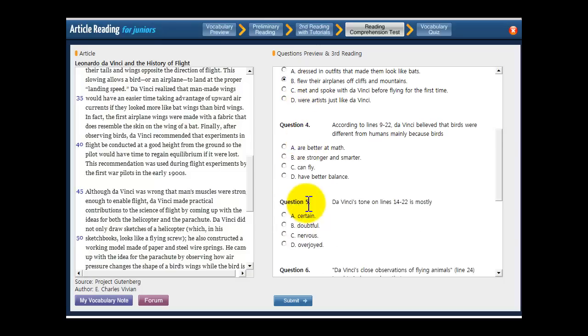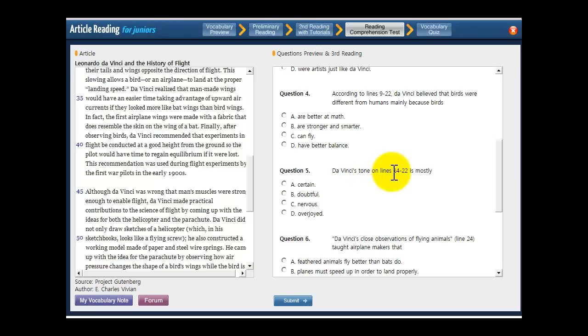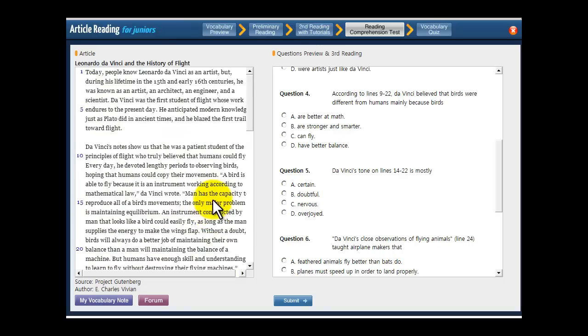Let's scroll down to number five. Da Vinci's tone on lines 14 through 22 is mostly what? And if you'll remember, tone is how someone says something. If they say it happily, they'd be saying it like, yay, I'm happy. If they say it sad, the tone would be something like this. I'm so sad. So let's go look at those lines, 14 through 22, right here.